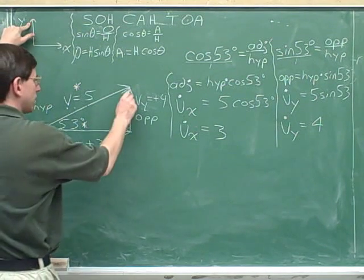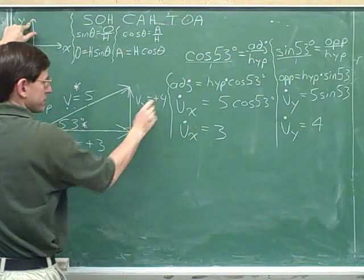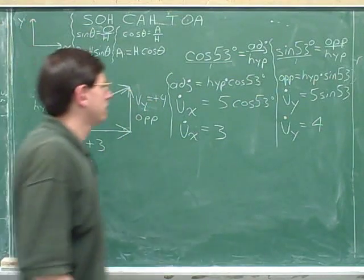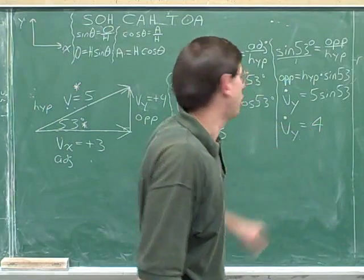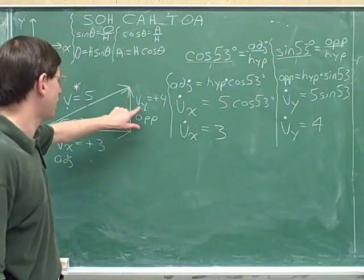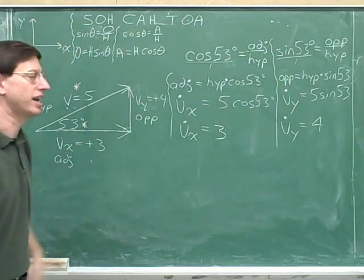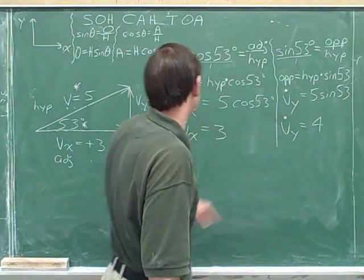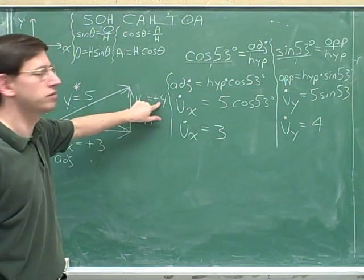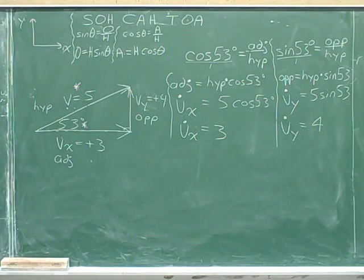VY equals positive 4. We've chosen up as positive, and this direction is up. So this is a positive number. When we write down the magnitude, we don't include a sign, because magnitudes are always positive. But when we actually write down the signed component, we include the sign. Remember that if we put in the dot, we're referring to a magnitude. You don't need a sign. If you don't put in the dot, you do need a sign, because that's not a magnitude.